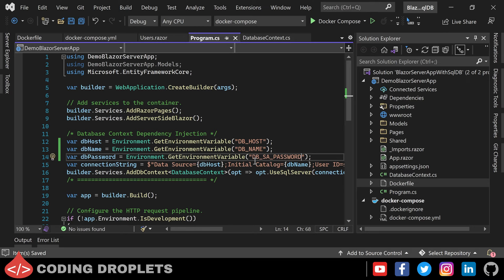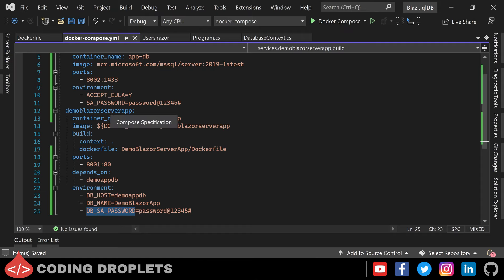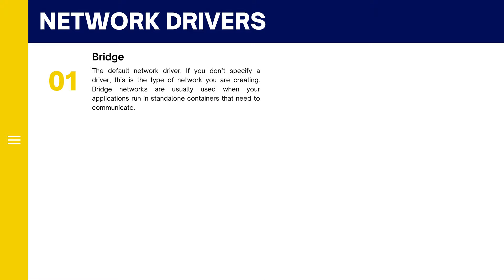Next, an important thing to discuss is about networks in Docker. We can place multiple containers in the same network if they need to communicate with each other. While creating a Docker network we can specify the network driver we need to use. Let's see the available network drivers in Docker. The Bridge driver is the default network driver — if you don't specify a driver this is the type of network you are creating. Bridge networks are usually used when your applications run in standalone containers that need to communicate.